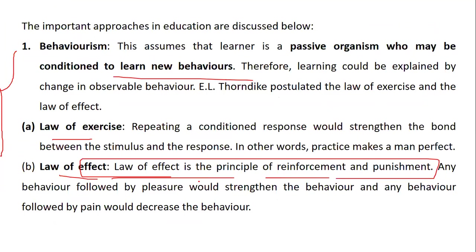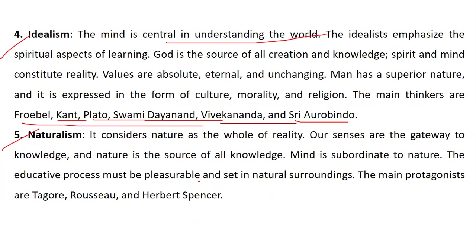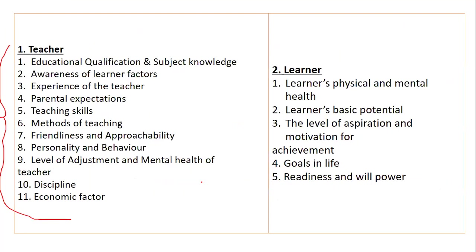To summarize the approaches: Behaviorism — Law of Exercise and Effect; Gestalt Psychology — insights; Constructivism — constructing knowledge for oneself; Idealism — God as the source of all creation; Naturalism — nature as the whole of reality; Pragmatism — logic and scientific methods; Humanism — human as the center; Rationalism — ultimate source of concepts and knowledge; Existentialism — freedom of choice. During the crash course and revision, I'll give you the easiest way to remember these.